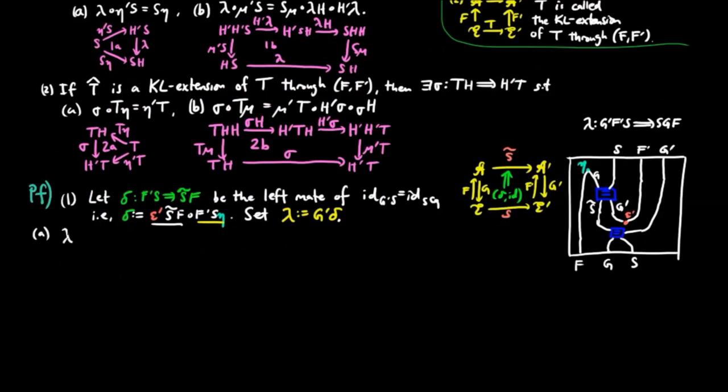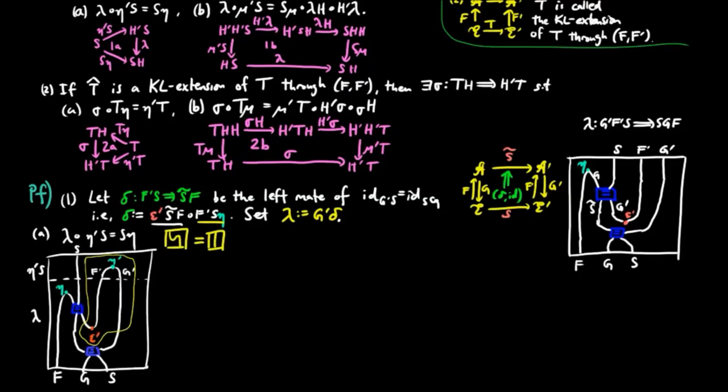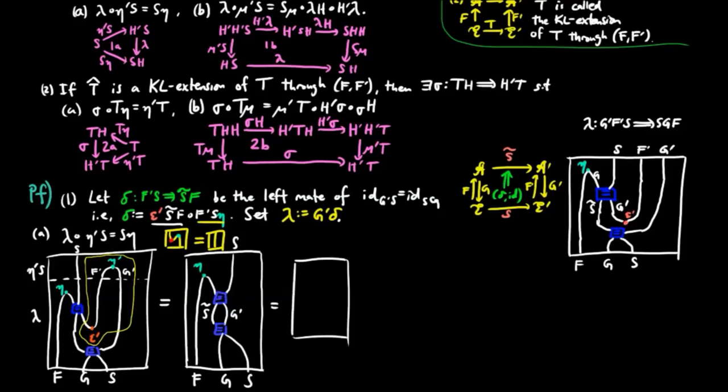Then to show 1A, we see that the string diagram of lambda eta prime S is equal to the following string diagram by the triangle identity for F'G'. Then we can remove the composition of equalities to arrive at S eta.